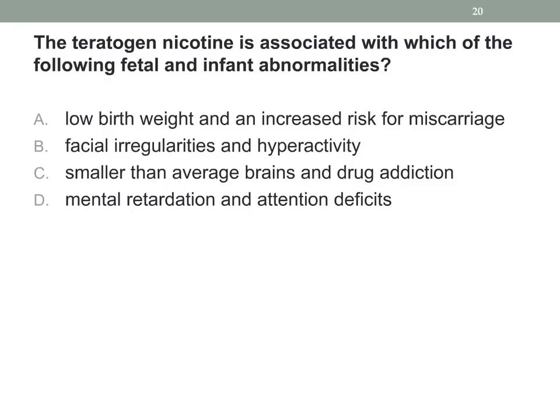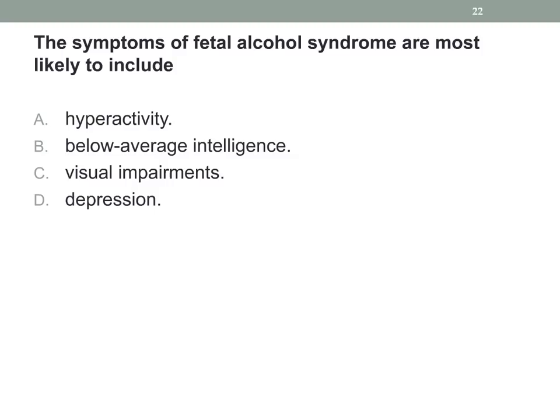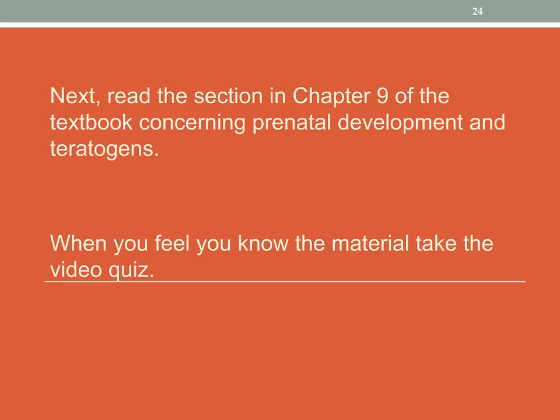The teratogen nicotine is associated with which of the following fetal outcomes: low birth weight and an increased risk for miscarriage; facial irregularities and hyperactivity; smaller than average brains and drug addiction; or mental retardation and attention deficits? The correct answer is low birth weight and an increased risk for miscarriage. The symptoms of fetal alcohol syndrome are most likely to include below average intelligence — and that is the correct answer.